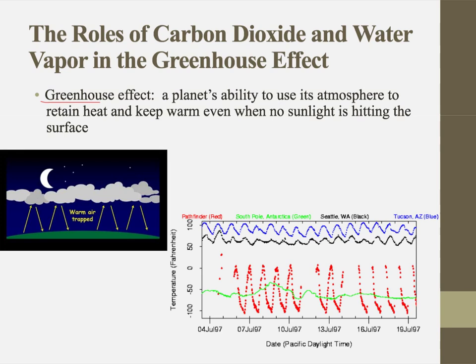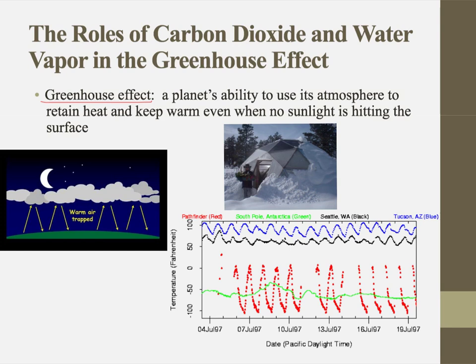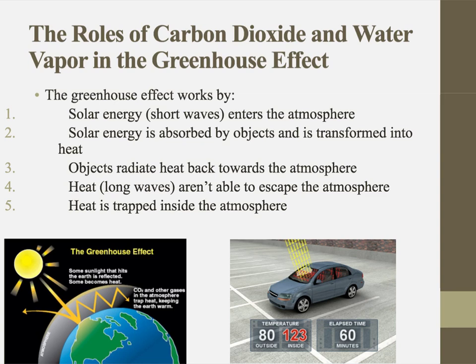The atmosphere is responsible for what we call the greenhouse effect. The greenhouse effect was actually named after greenhouses, which were a wonderful invention allowing us to keep the inside warm enough for plant growth even during very cold times of the year. The greenhouse effect is a planet's ability to use its atmosphere to retain heat and keep warm even when no sunlight is hitting the surface.